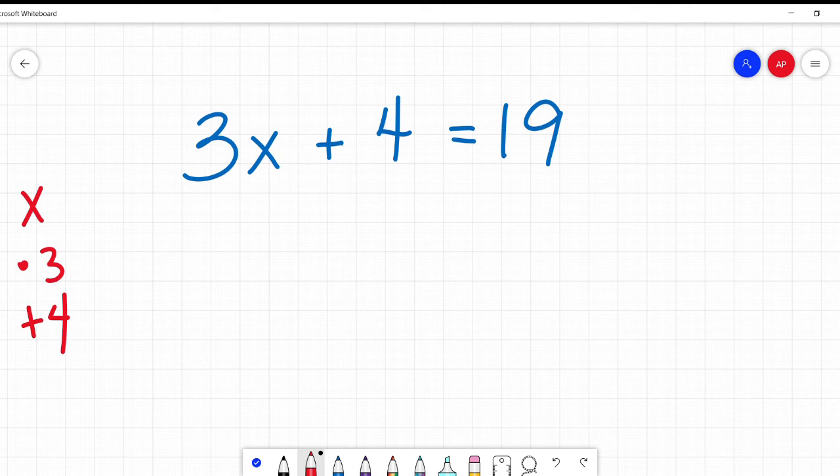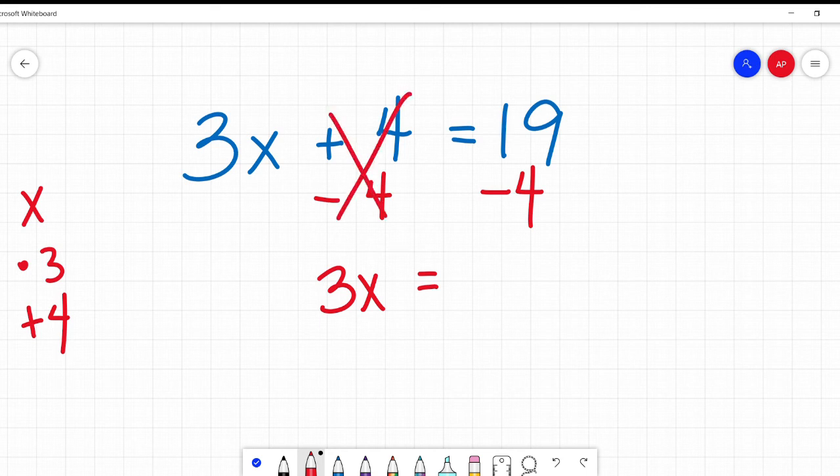Opposite of plus is minus. So, I'm going to subtract 4 from both sides because it's a teeter-totter. And I am left with 3x on the left because plus 4 minus 4, that's gone now. Actually, let's go do-do-do like that. And 19 minus 4 is 15.